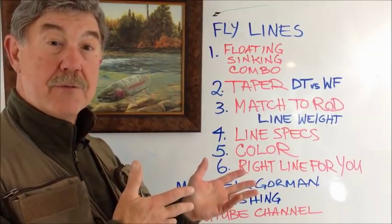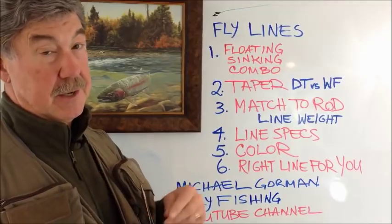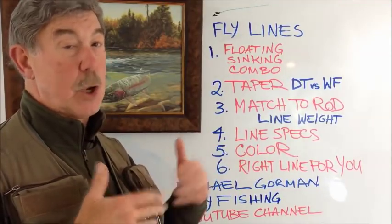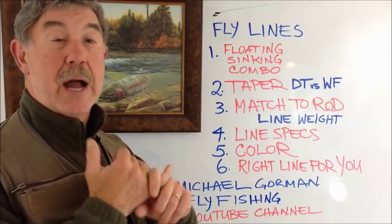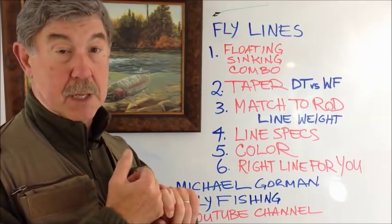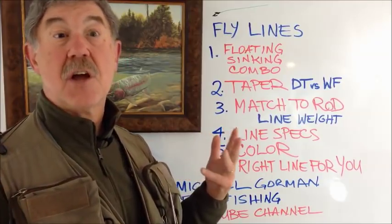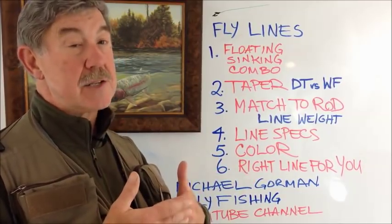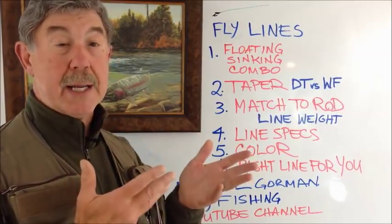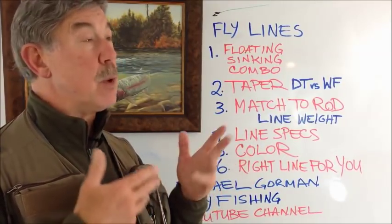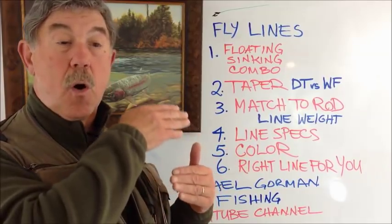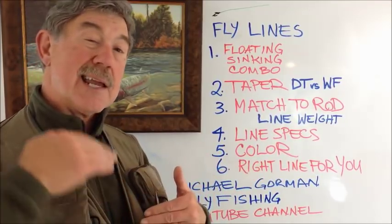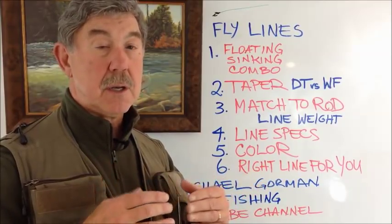When you get into these combinations, that's where the numbers and choices go exponential. The sinking portion can be five feet long or as many as 30 feet long, and everything in between. On top of that, with sinking lines you have a variety of sink rates — from a Type 1 or intermediate rating with a sink rate of about one and a half to two inches per second, all the way to a Type 7 or Type 8 sinking line which may sink at up to 10 inches per second.